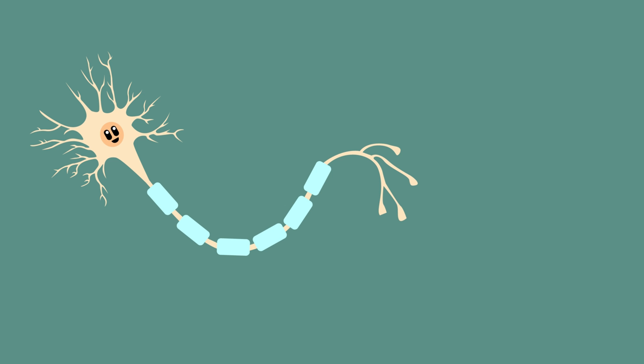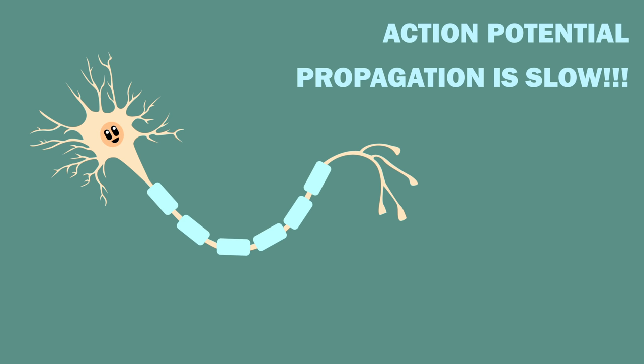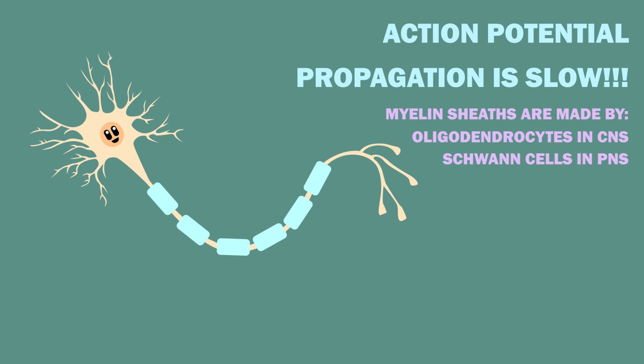Another important point, action potential propagation is slow. That's why most of your neurons have myelin sheaths, which are rich in lipids. Myelin sheaths are made by oligodendrocytes in the central nervous system and Schwann cells in the peripheral nervous system. They insulate the axon and prevent leakage of charged ions.